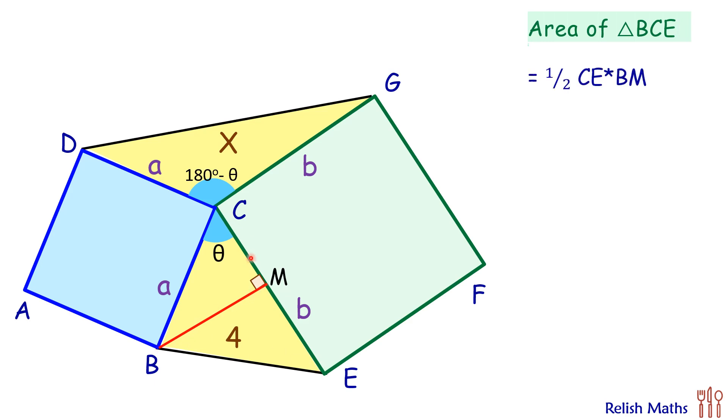right angle triangle. So the value of BM will be hypotenuse times sin θ, so BM is a sin θ. Here we are